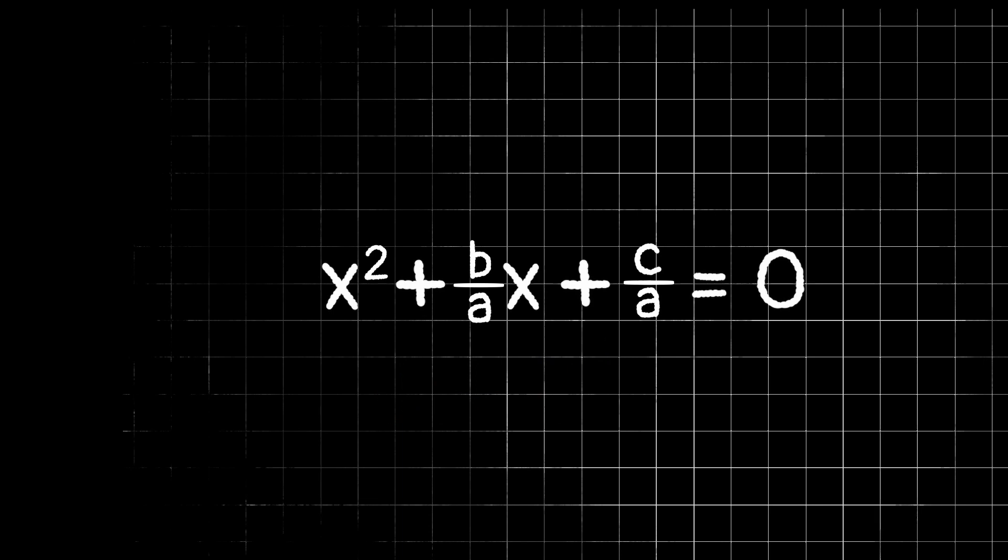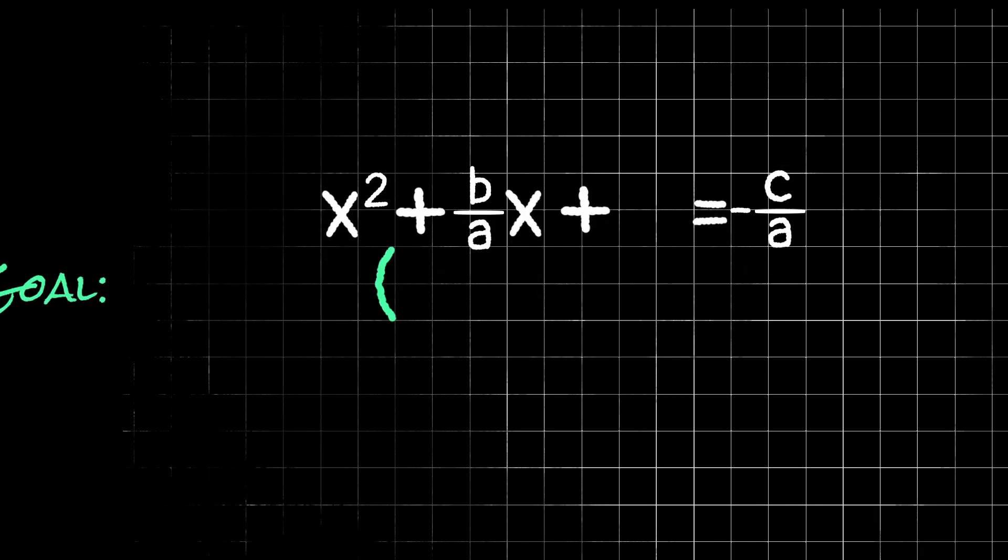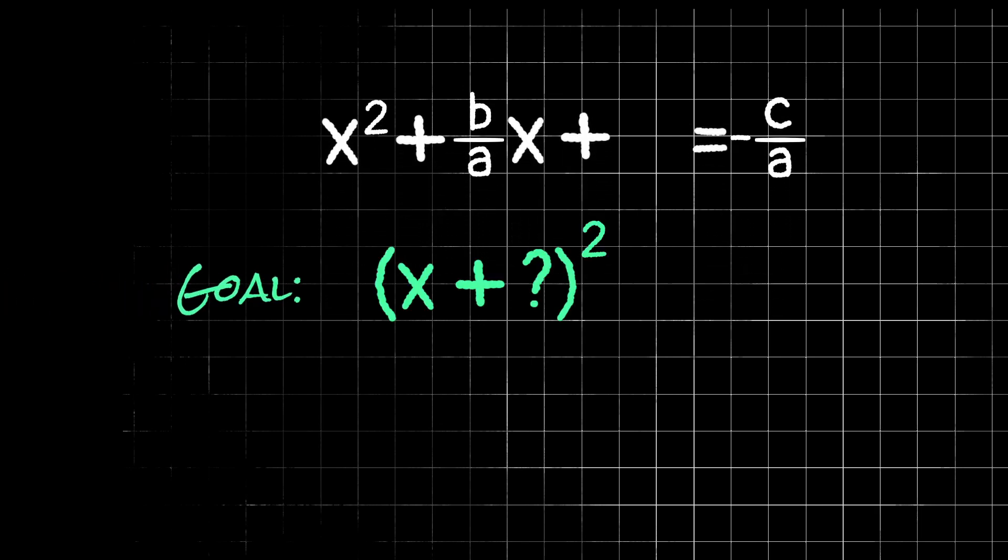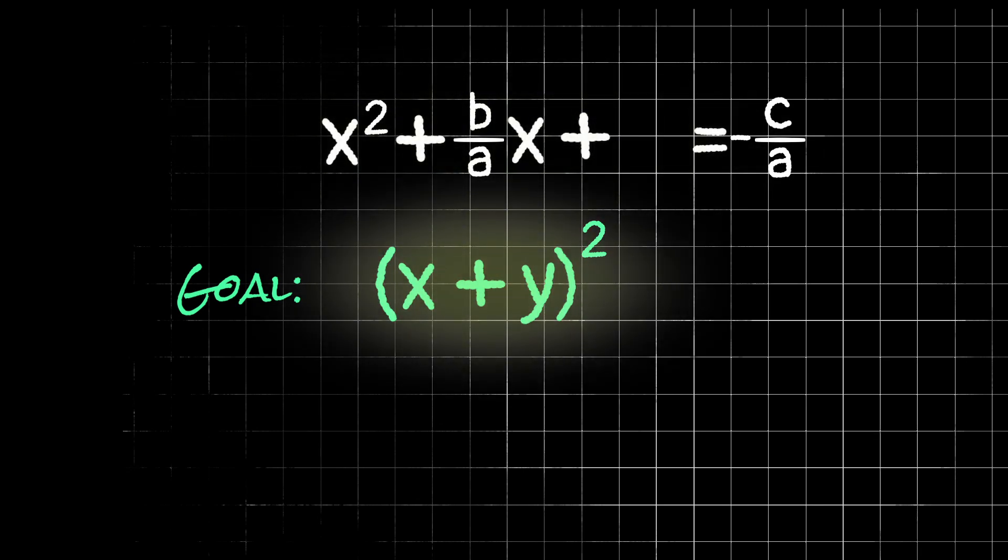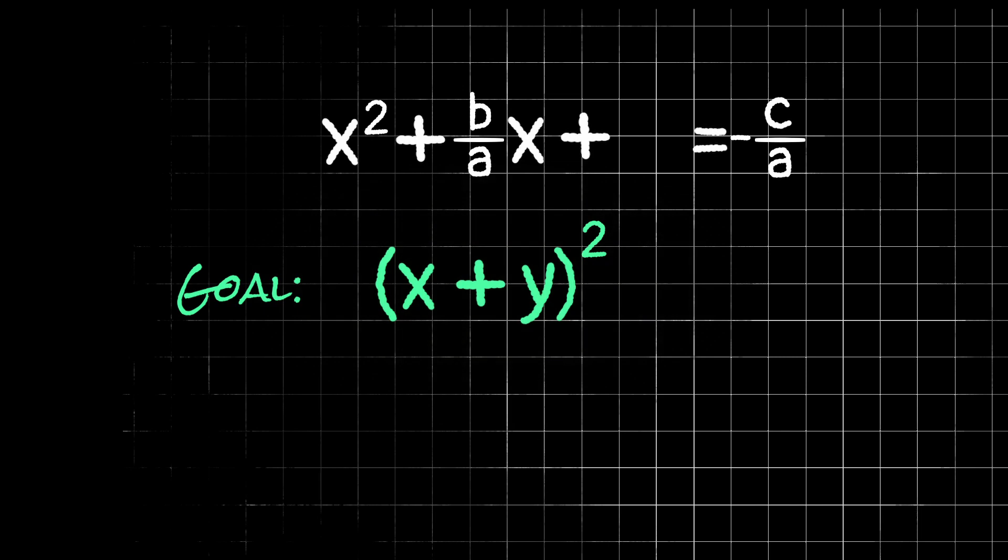I'm going to take this c over a and subtract it from both sides so that on the left side, we only have the terms that contain an x. So thinking back to our goal of we want x plus something quantity squared, just for now, I'm going to call that something y. So we have x plus y quantity squared. That's our goal. We want to get this left side of our equation to look like this. So I'm going to think about this algebraically first. If we multiply out x plus y quantity squared, we get x squared plus 2xy plus y squared.